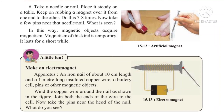Wind the copper wire tightly around the nail, as shown in the figure. Then join both ends of the copper wire to the battery cell, as shown. Now take the pins near the head of the nail. What do you observe? After winding the copper wire around the nail and connecting the ends to the battery cell, if we hold the pins near the nail's head, the pins stick to the nail.